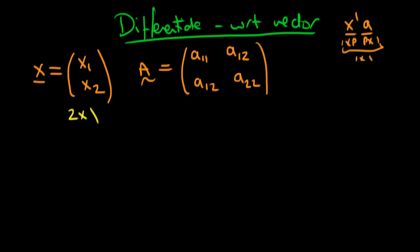If we take these two things and multiply them together in a certain form, we get what we refer to in matrix notation as the quadratic form. So if we take x transpose, multiply it by A, our symmetric matrix, and then multiply by x, this is what we refer to as the quadratic form of matrix A. It's called that, which is quite evident if we write it out in full.